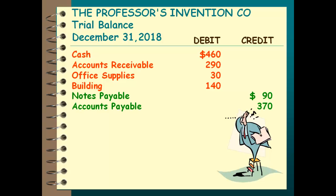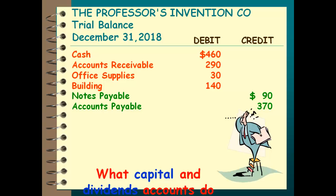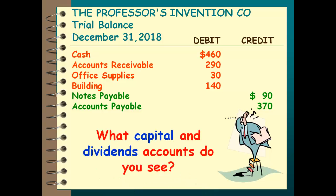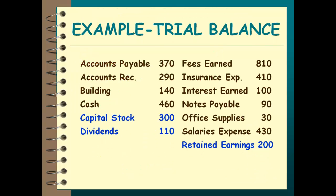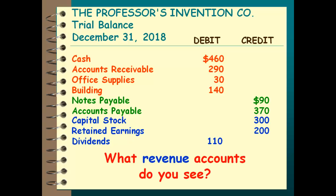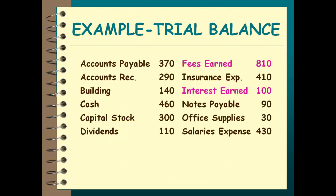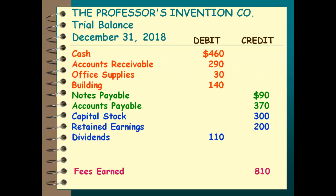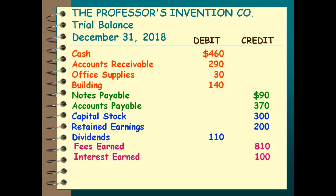After liabilities comes capital — 'can dodge.' We have capital stock and retained earnings. Right after capital comes dividends. Retained earnings and capital stock will have a credit balance, whereas dividends has a debit balance. We always list capital stock before retained earnings. After that come revenues — fees earned and interest earned. Remember, there are three words that tell us something's a revenue: revenue, income, and earned. Those are credits, so we put them in the right column.